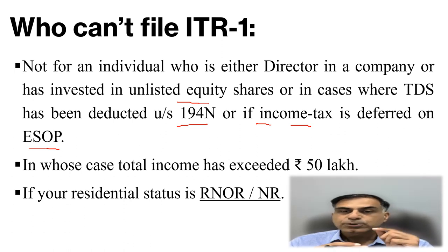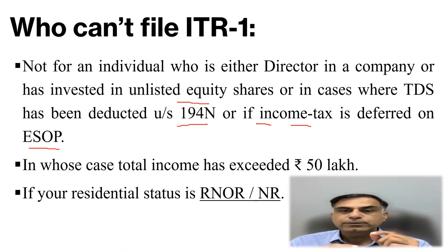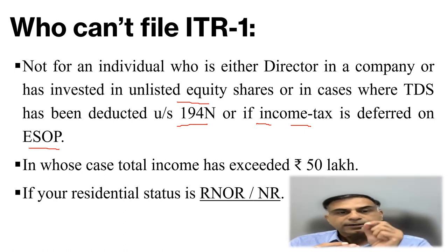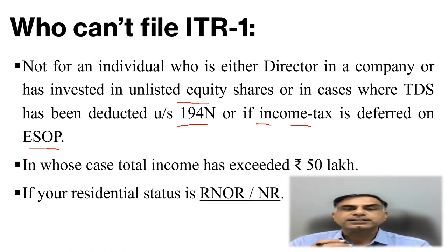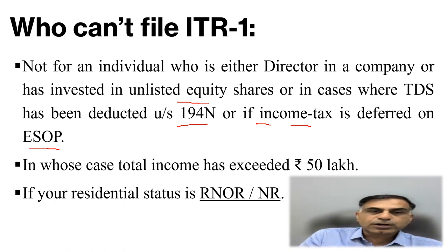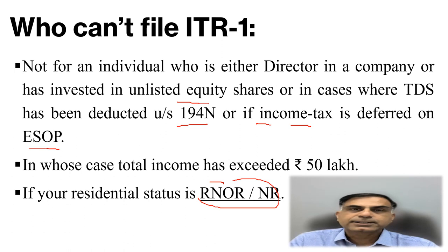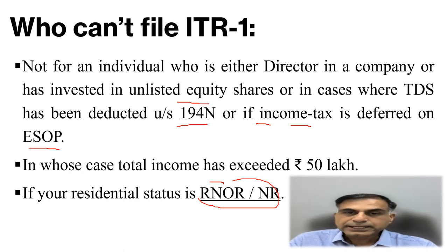In cases where total income exceeds 50 lakh, you have to fill ITR 2, where you must provide the schedule of assets and liabilities as on 31st March. If your residential status is resident but not ordinarily resident, or a non-resident, you also cannot file ITR 1 and must move towards filing ITR 2 as per income tax law.